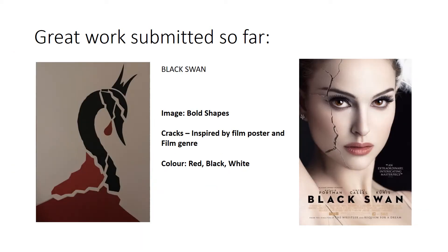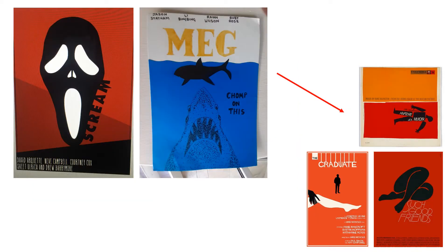This example is for the film Black Swan. The student has taken the idea of the cracked face from the original poster and incorporated that with the swan, breaking up the shape. The swan is very simplistically drawn and filled in with a solid colour, keeping to this red, black and white colour scheme — so there are influences to the original poster, but very much in the Saul Bass style. Two further examples here, very different from one another but very much linking to Saul Bass' work. We've got The Scream using simplistic shapes and colours with very appropriate typography, and the second example for The Meg uses pointillism and block colour. The students have thought really carefully about where the typography is going to appear on the poster.